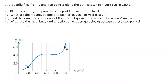In this question, a dragonfly is flying from point A to point B in 1.50 seconds. We have to find the x and y component of the position vector at point A and also find the magnitude and direction of its position vector at point A. After that, we have to find the x and y component of the dragonfly's average velocity from point A to point B, and also find the magnitude and direction of its average velocity between these two points.